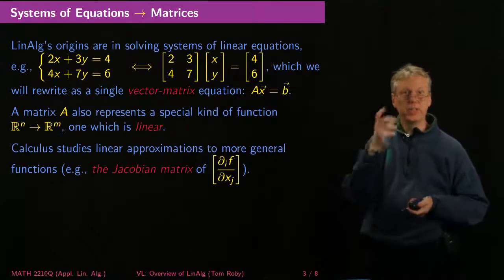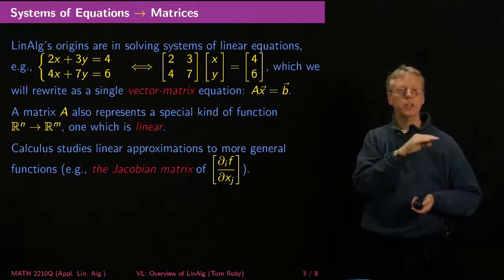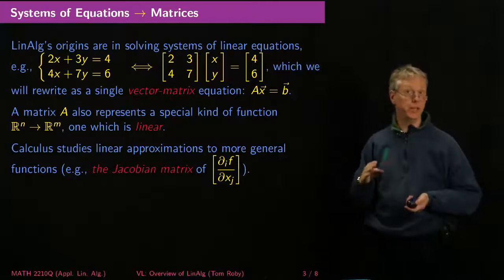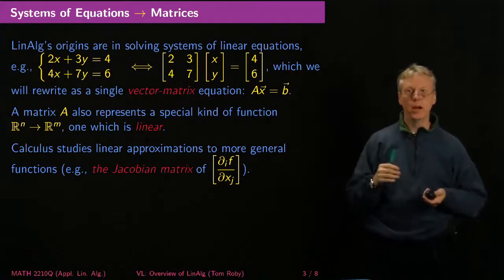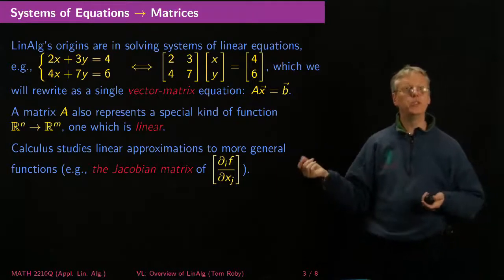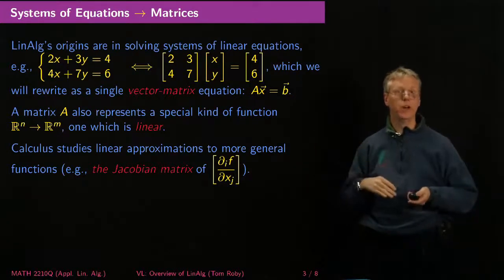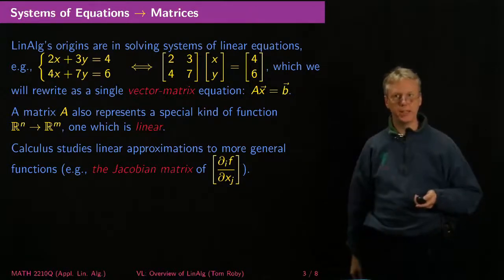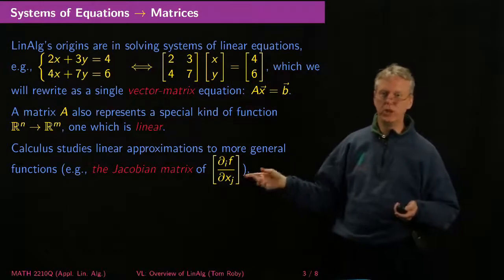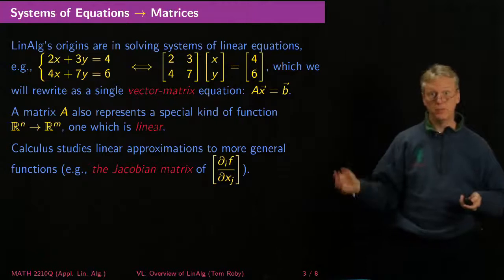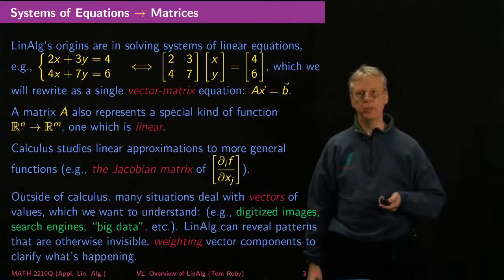And in calculus, the main goal was to study more complex functions using simpler functions, linear functions, which are straight lines or planes or whatever, tangent planes. And so that's what this kind of a matrix does, is it gives you the main part of the tangent plane to more complicated functions, and you may have seen the Jacobian matrix of partial derivatives if you've had multivariable calculus already.